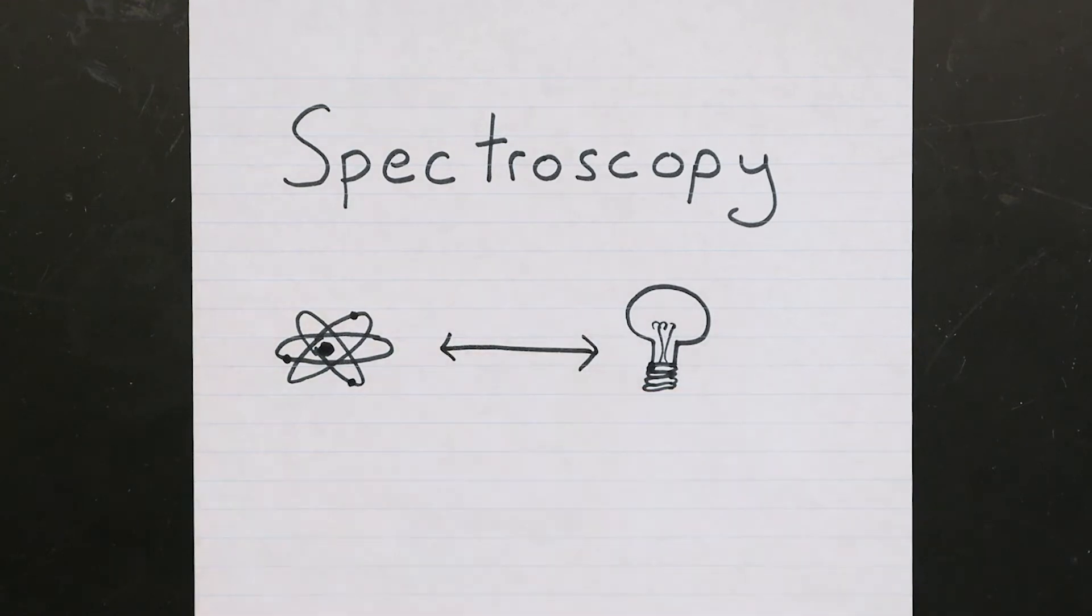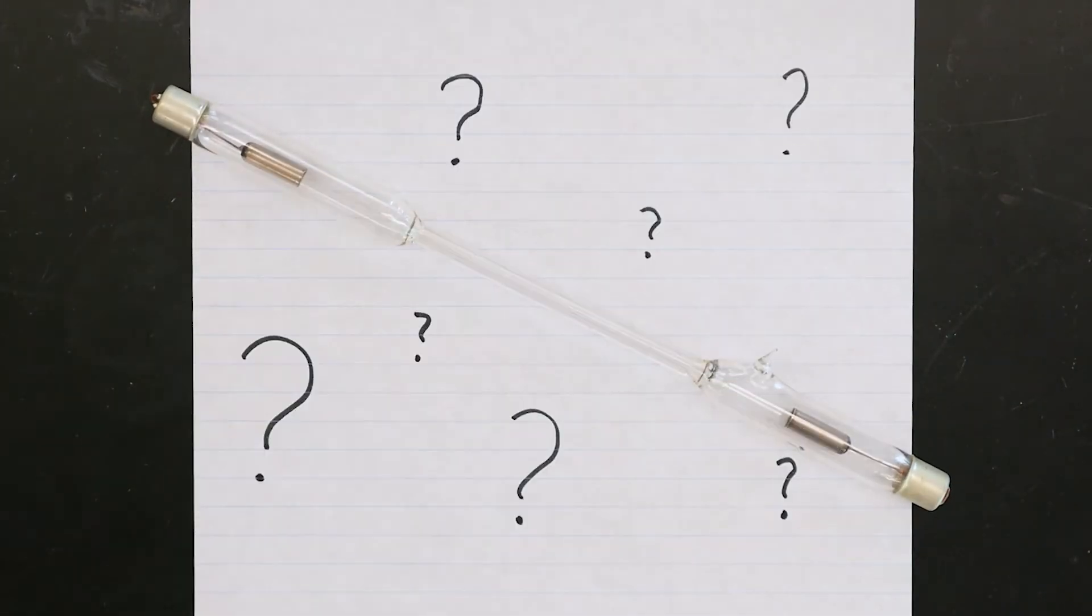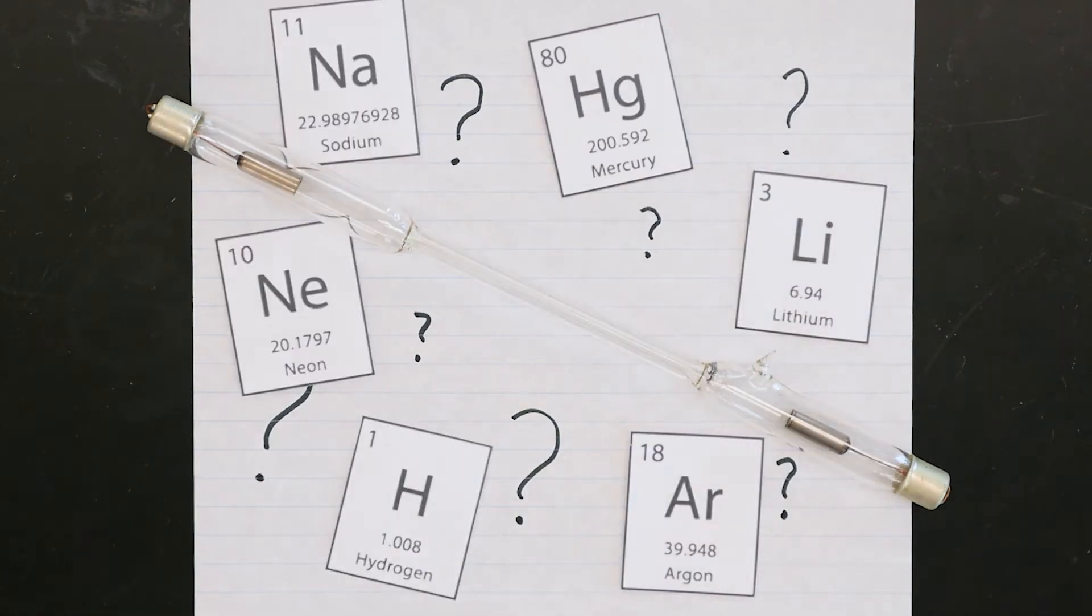In fact, you can actually use the color of light that matter emits to determine exactly what atoms are present in that sample. In today's experiment, you can make use of this amazing fact for yourself to determine which chemical elements are present in a sample of gas.